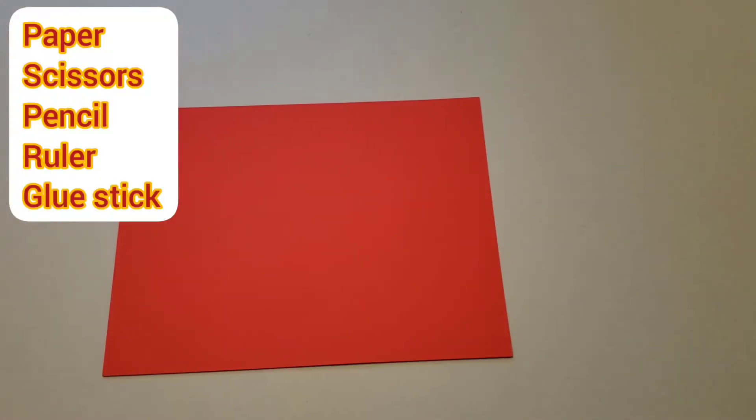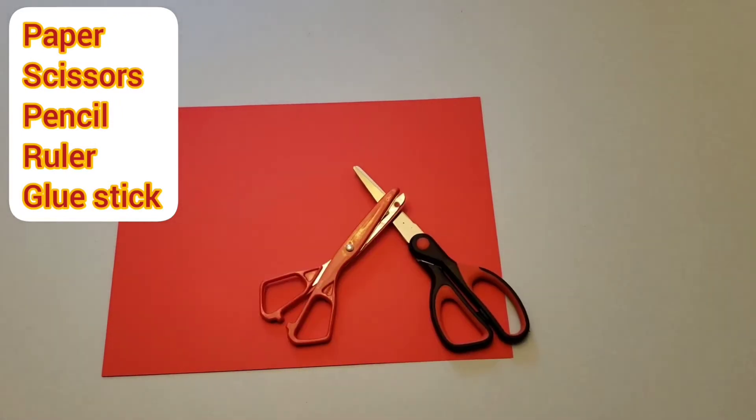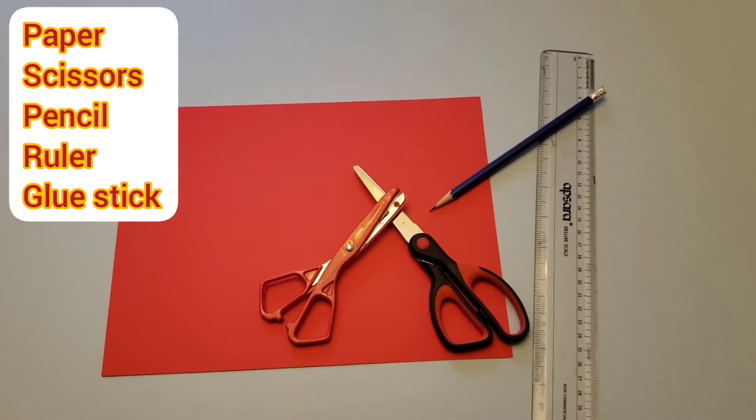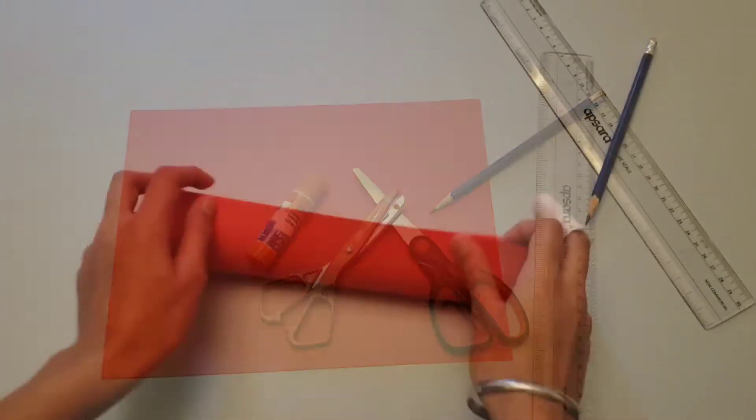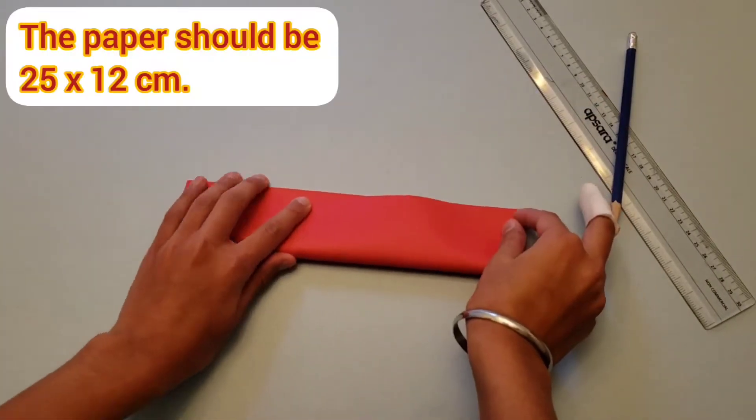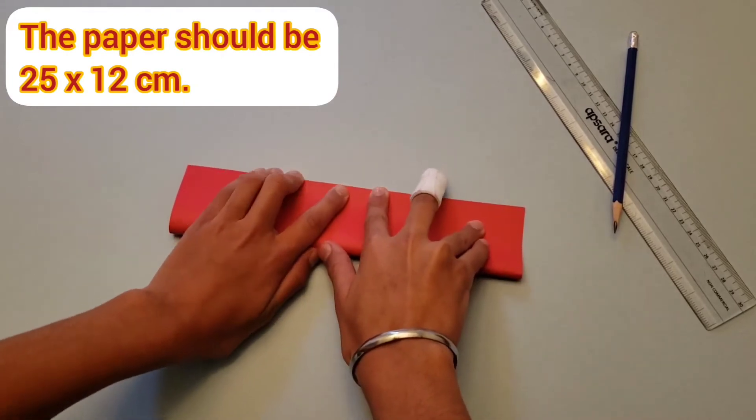For this craft, you'll need a piece of paper with some bright color, scissors, safety scissors for the little ones, a ruler and a pencil, and a glue stick. So the measurement of the paper should be 25 by 12 centimeters.